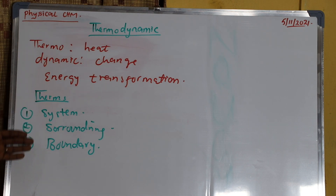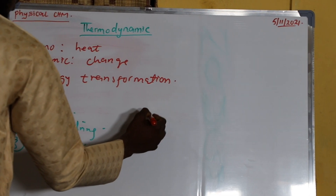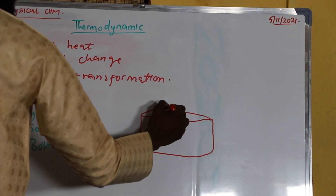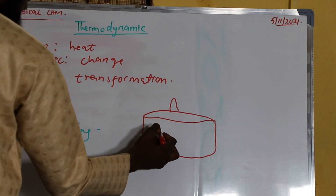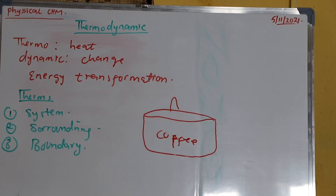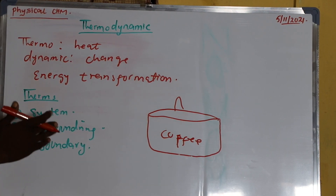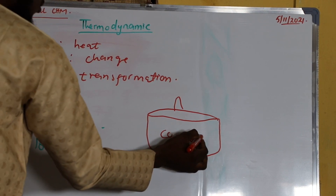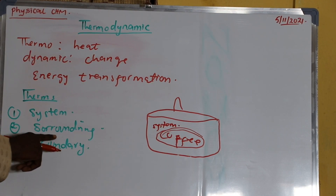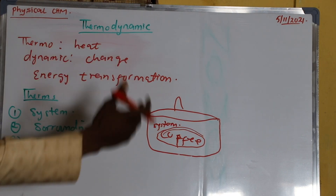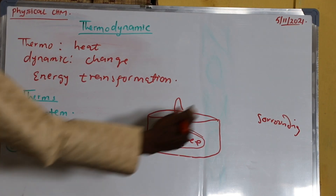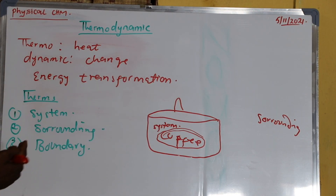Let's discuss these three terms of thermodynamics. Firstly, let's assume this is a cylinder. You are preparing tea or coffee — let's say coffee. System: a system is anything that an experiment can be conducted on. This coffee you are preparing is what we call the system. Then surrounding: surrounding is anywhere that is outside the system. Anywhere outside the system is what we refer to as surrounding.